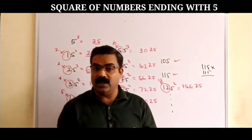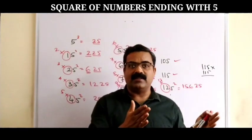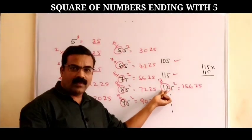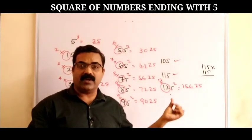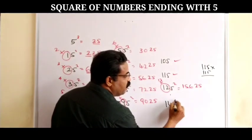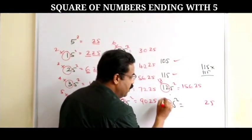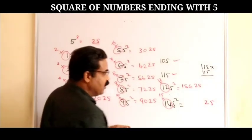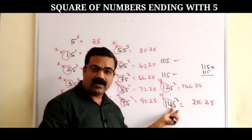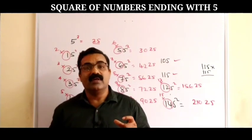This method is very easy and very fast. For any number ending with 5: the last two digits of the answer are 25, and the remaining part is obtained by multiplying the prefix by its next number. For example, 145²: 14 × 15 = 210, and appending 25 gives 21025. Practice this and use it in your competitive exams.